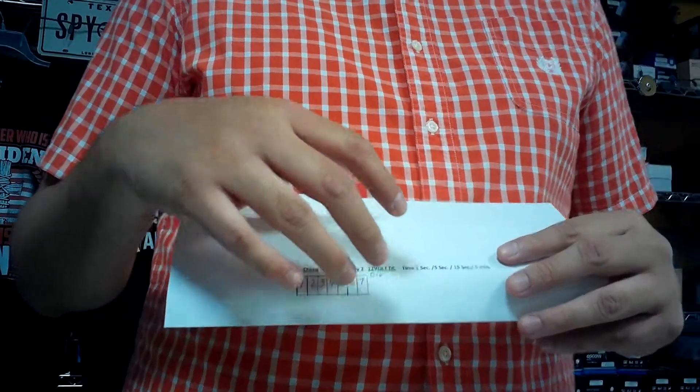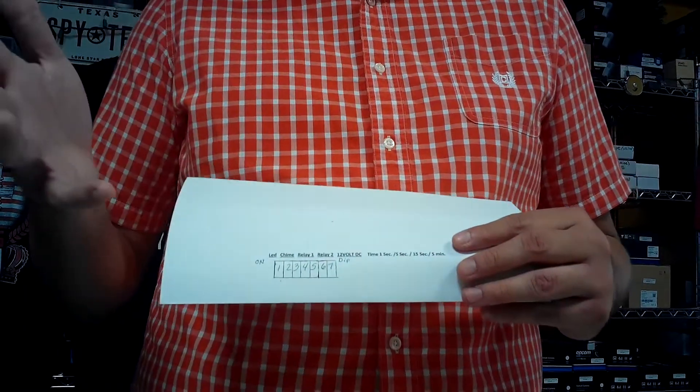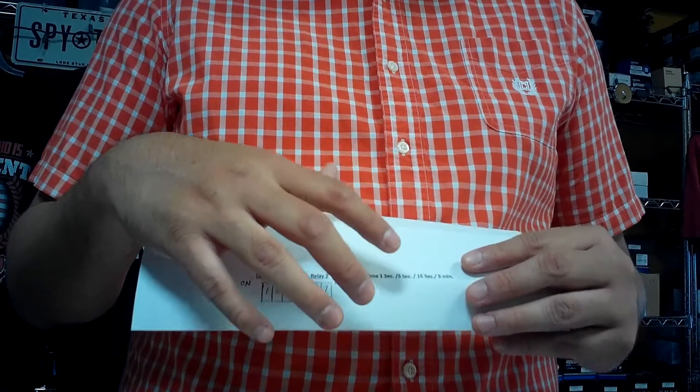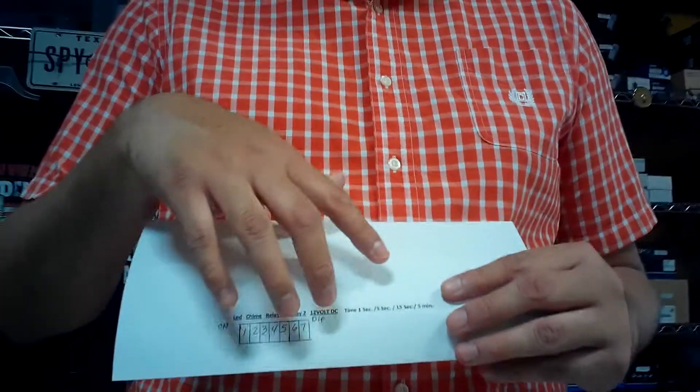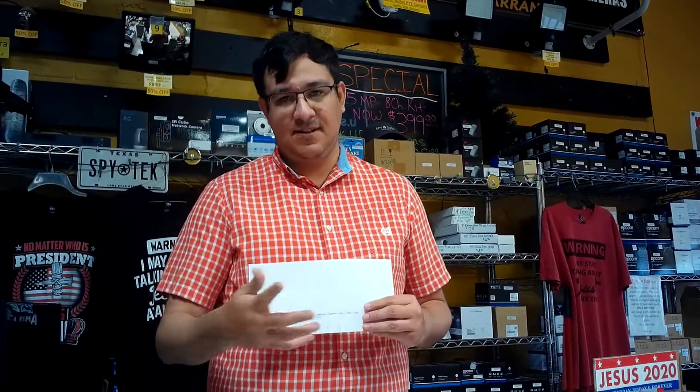So for that, it's going to determine how long the siren or bell is going to go off for. So you can put it for one second, five seconds, 15 seconds, or all the way up to five minutes. Now to learn how to control, how to set those for the time limits, just refer to your user manual, and then it will tell you which sequence six and seven need to be on or off.